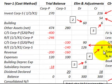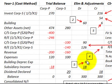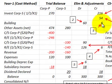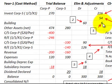The only remaining entry is to adjust depreciation: we debit building depreciation expense for $6,000 and credit the building account for $6,000.